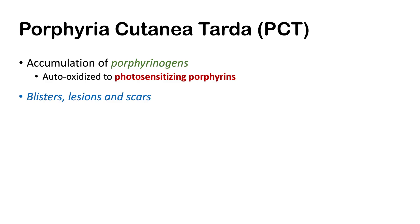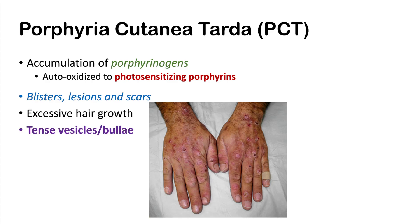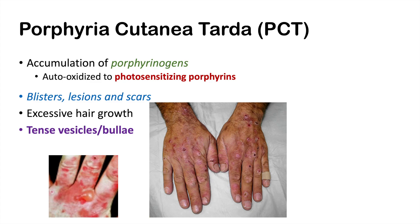These photosensitizing porphyrins can lead to blisters, lesions, and scars, generally in sun-exposed areas like the hands. This is where many of the myths of vampires have come from — individuals with PCT are sensitive to sun and actually become burned and affected by sunlight. Other presentations include excessive hair growth like hypertrichosis, as well as tense vesicles and bullae, all occurring on sun-exposed skin.